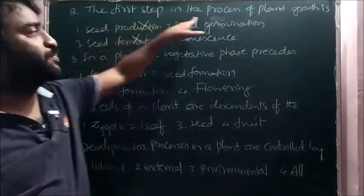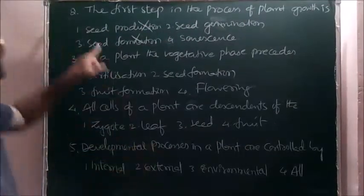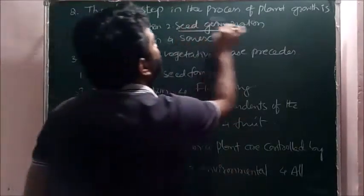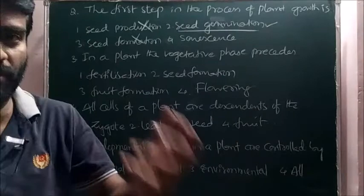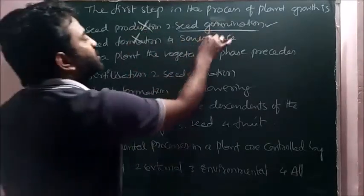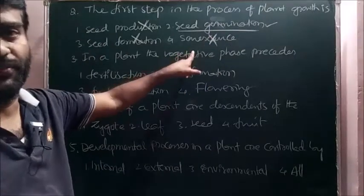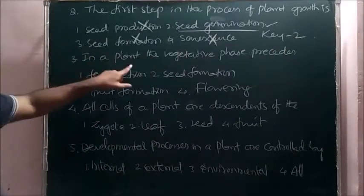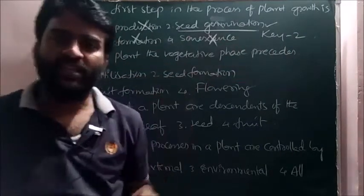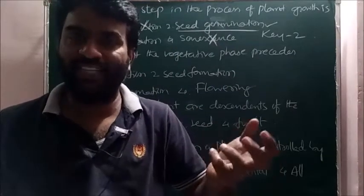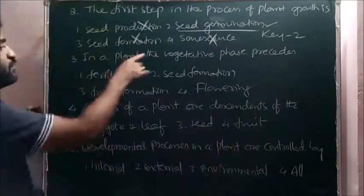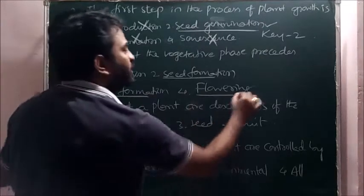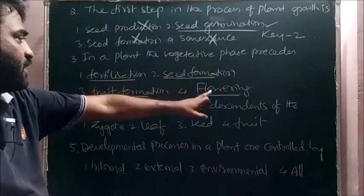Next, the first step in the process of plant growth is seed production wrong. The plant's life is started with seed germination. Seed germination is a part of growth. Seed formation wrong. Seed dormancy, senescence wrong. Senescence is the last phase of the plant life, hence here the key is two. Next, in a plant, vegetative phase is followed by seed. Seeds means it is followed by seed formation wrong, fruit formation wrong, flowering.